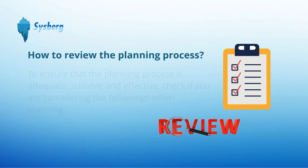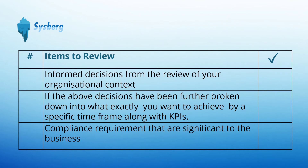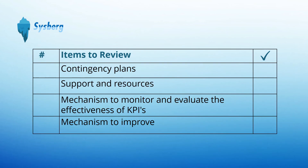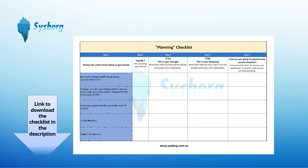How to review the planning process? To ensure that the planning process is adequate, suitable, and effective, check if you are considering the following when planning: the informed decisions from the review of your organizational context; whether those decisions have been further broken down into what exactly you want to achieve by a specific time frame, along with key performance indicators and compliance requirements significant to the business; contingency plans; support and resources; and mechanisms to monitor and evaluate the effectiveness of KPIs, as well as mechanisms to improve. Please note that the table provided is guidance only — please add items relevant to your organization. These points are also covered in a checklist which you can download through the Sisberg website.